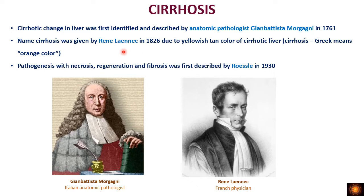Later on, René Laennec was the person who used the term cirrhosis. In Greek, cirrhosis means orange color. He gave this term because the cirrhotic changes in fatty liver appeared yellowish-tan in color. Later, the pathogenesis — degeneration, regeneration, and fibrosis — was described by Rossle in 1930.